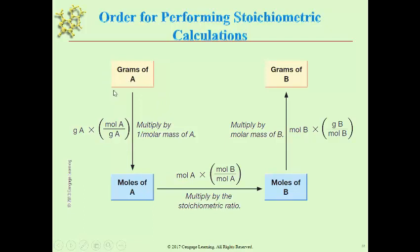We will use grams, and we use molar mass — that value you calculate from the periodic table — to convert from grams of one substance to moles of that same substance. It is worthwhile to spend quite a bit of time on this diagram to understand the vocabulary. If you don't understand the vocabulary, you're going to mix up grams of a substance with molar mass because they both use grams in their units, or mix up moles of a substance with the mole-to-mole ratio from the balanced equation. Grams of A can be converted to moles of A using the molar mass of A from the periodic table.